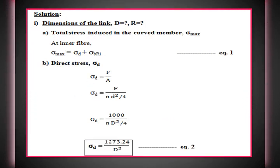Now for the solution — dimensions D = ? and R = ?. Equation 1: sigma_max = sigma_D + sigma_B(Ri). For direct stress: sigma_D = F/A. Since the member is circular in cross-section, A = pi × D² / 4. So sigma_D = 1000 / (pi × D² / 4), which simplifies to sigma_D = 1273.24 / D² N/mm² — this is equation 2.